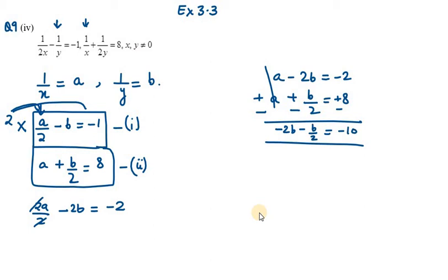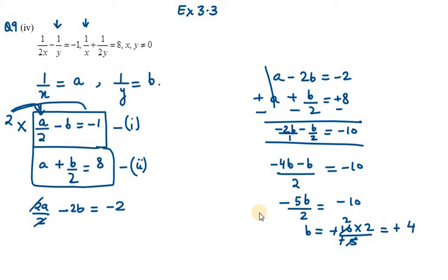Now we need to simplify the left hand side. For that we need to take LCM. We multiply the first term with 2, so it will be minus 4b minus b equals minus 10. Now we have minus 5b as numerator and 2 as denominator. Now using cross multiplication, it will be minus 10 into 2 over minus 5, so minus 20 over minus 5, which equals 4. B is positive 4.